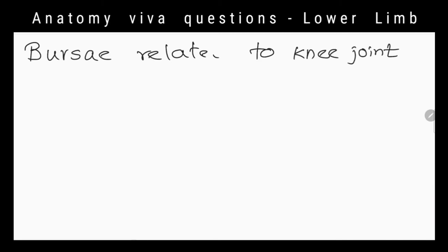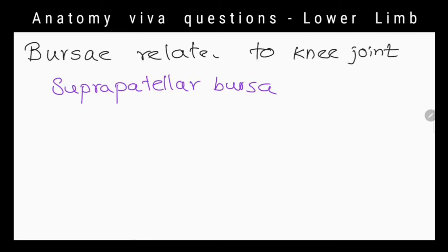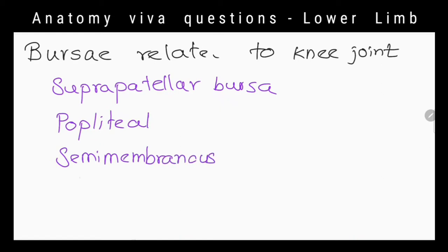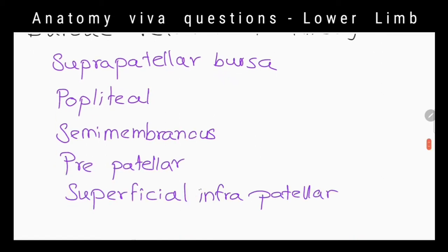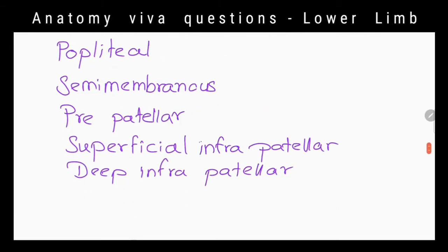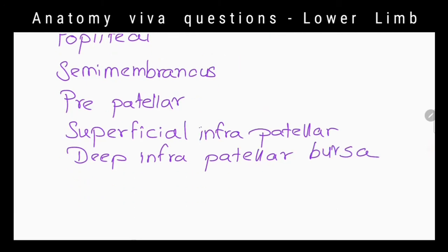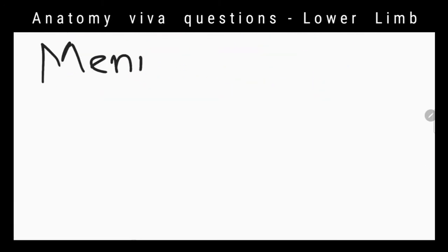What are the bursae related to the knee joint? The suprapatellar bursa, popliteal bursa, semimembranosus bursa, prepatellar bursa, and superficial and deep infrapatellar bursae.